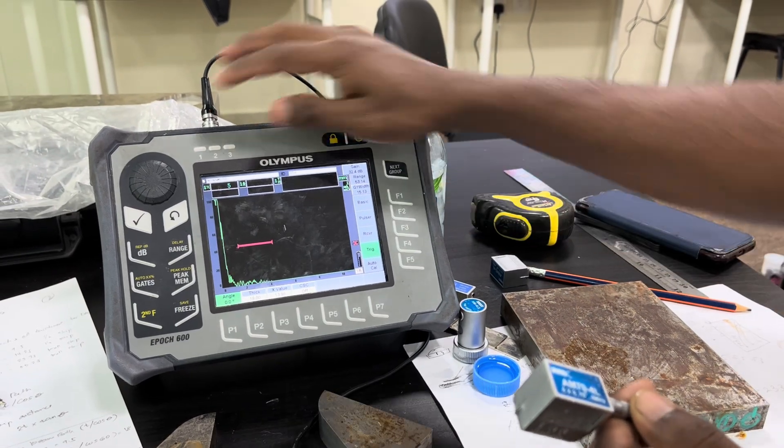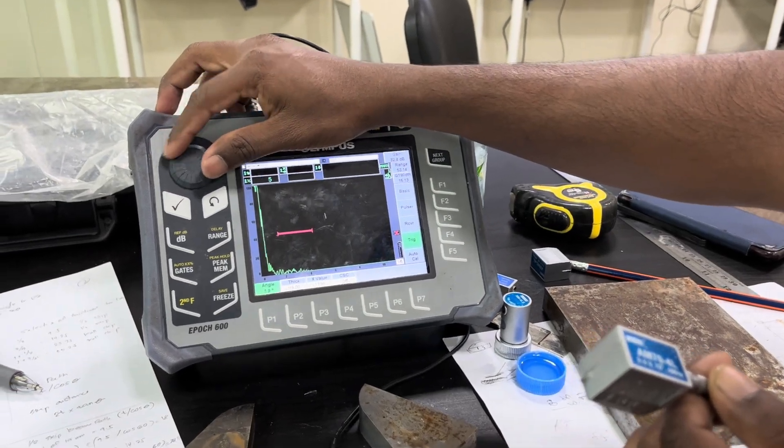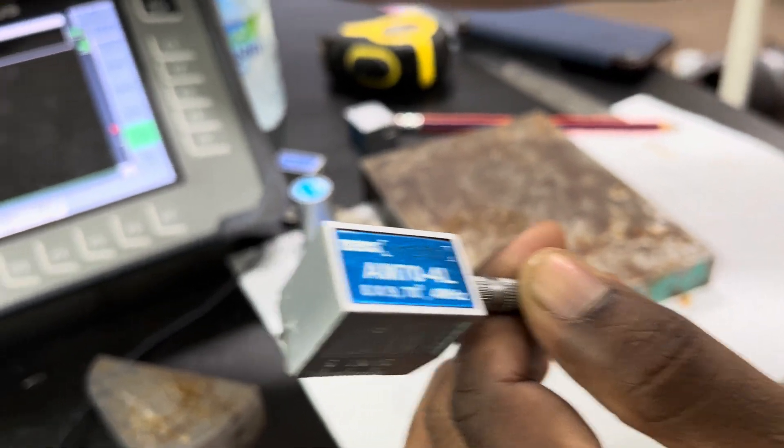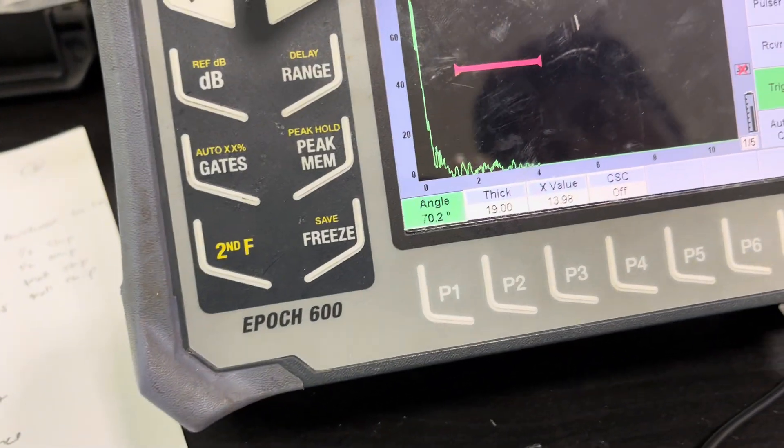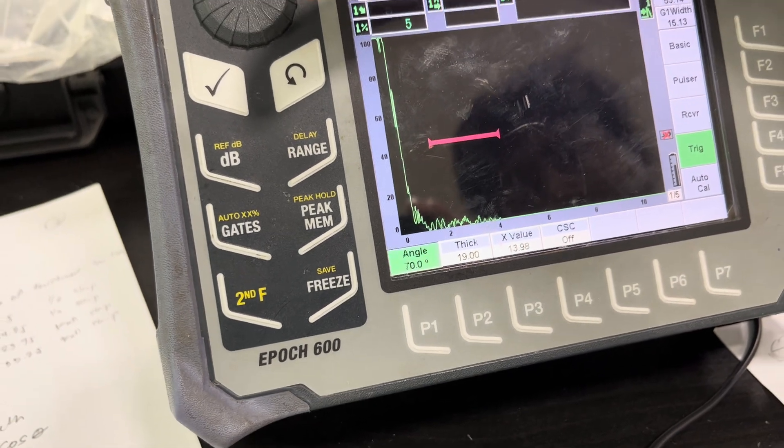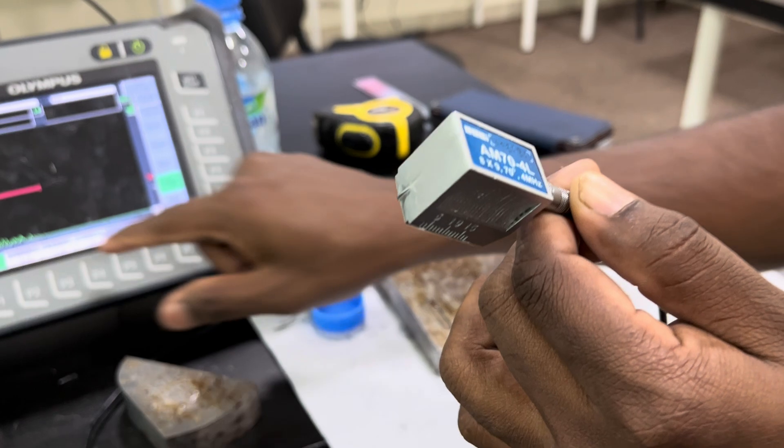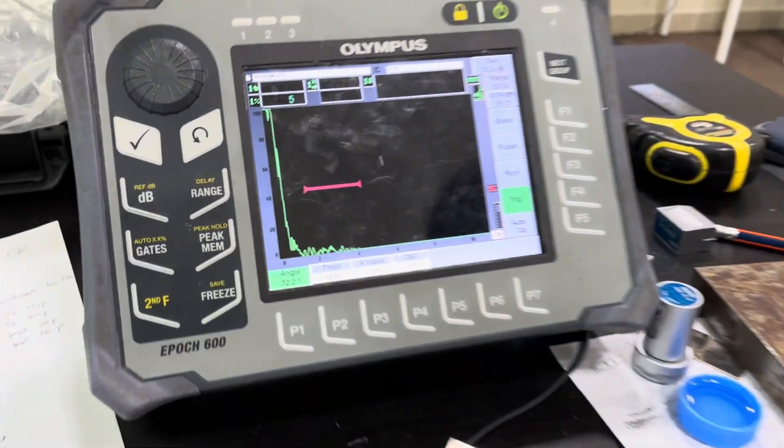I am going to change the angle to 70 degrees, and the reference block thickness is 19mm for job thickness up to 25mm.